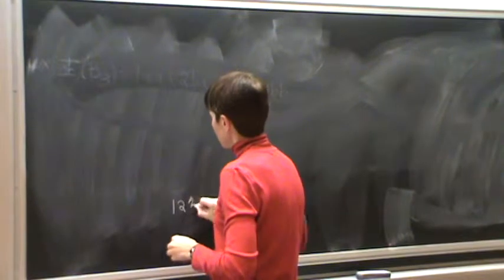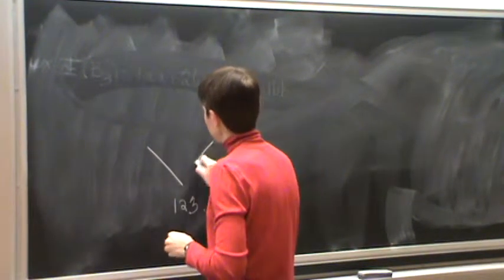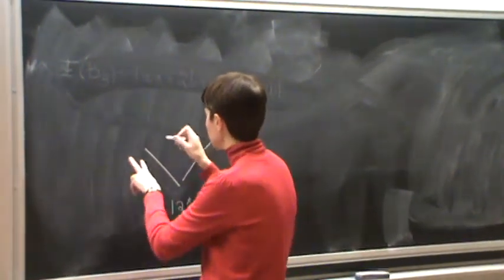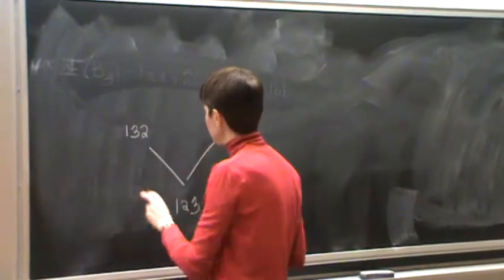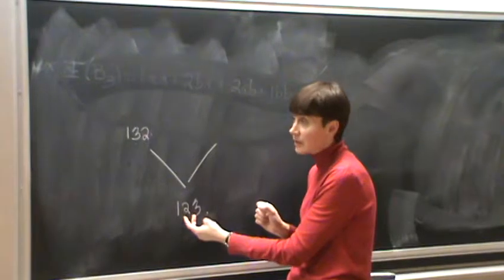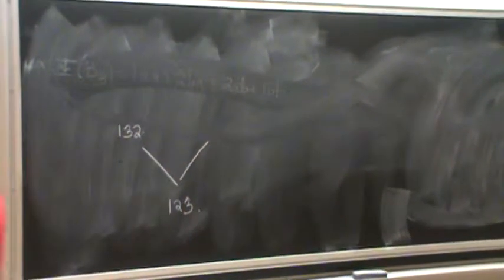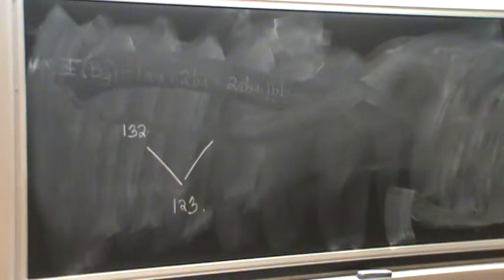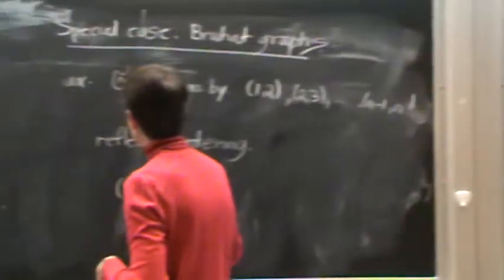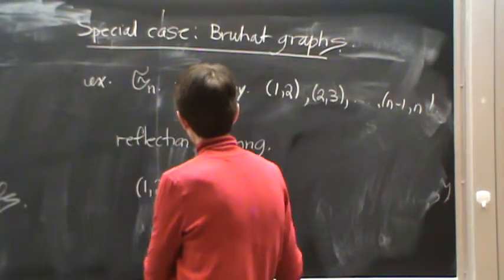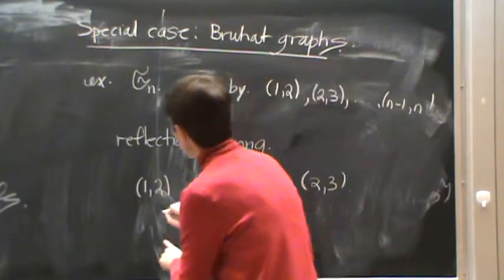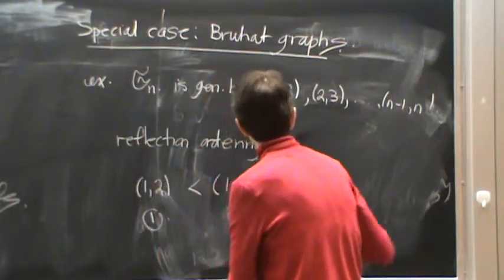And then, what I want to do is I want to start applying group elements to go up. So, for example, covering one, two, three is going to be one, three, two. And so what did I do here? I swapped the second and the third element. So I want to keep track of these things. So I want to use something that's called reflection ordering. And this always exists for Coxeter groups in general. So this is swapping one and two. This is going to be swapping one and three. This is going to be swapping the second and third position. And I'm going to use labels one for this one, two for this one, and three for this one.